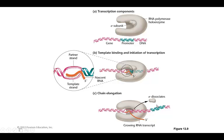The sigma subunit also dissociates as elongation is happening. Once everything is assembled, it's really not important for sigma to be there anymore. The RNA polymerase is then going to travel along the gene, again in the 5' to 3' direction, creating this growing transcript.